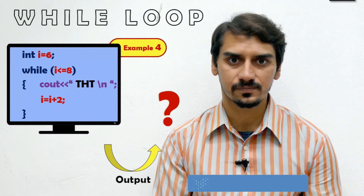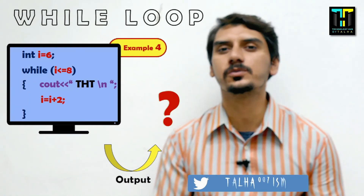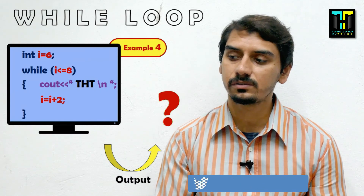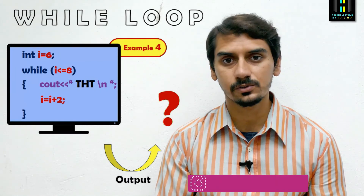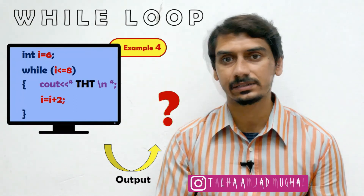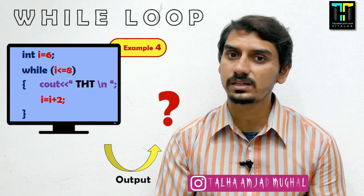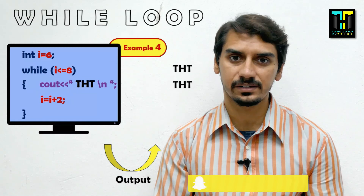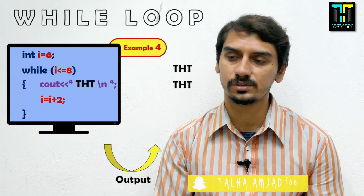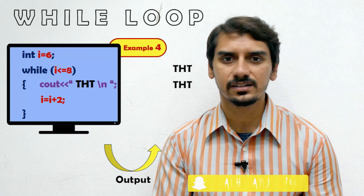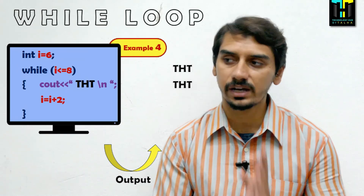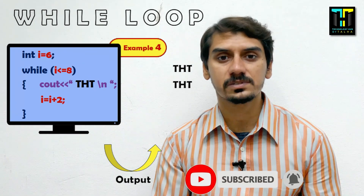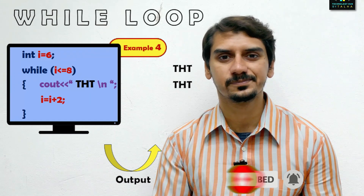Another example: if we initialize i with 6 instead of 1 (keeping the increment of 2 and condition i <= 8), then i = 6: 6 <= 8 is true — display 'tst'. Then i = 8: 8 <= 8 is true — display 'tst' again. So 'tst' is displayed two times. Now you can easily understand the while loop through dry runs and different examples. Don't forget to subscribe. Thank you so much for watching.